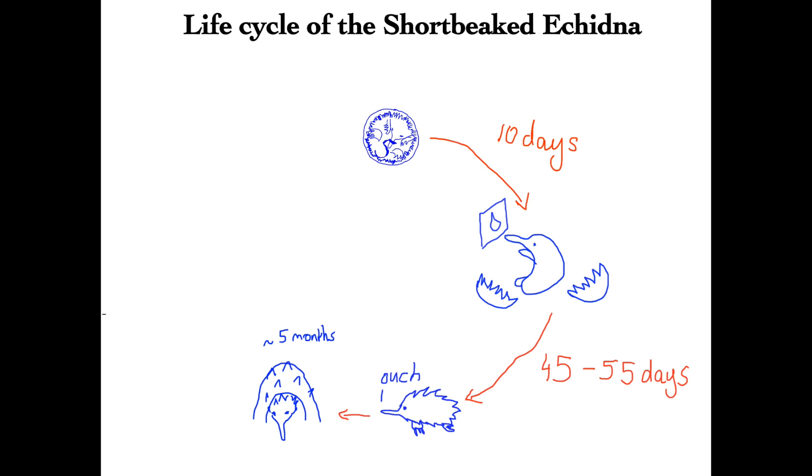When the female echidna reaches about five years of age, she becomes sexually active, and breeding season in July-August is when you actually see echidnas being semi-social, where up to 10 males will follow a female echidna around in what's called an echidna train. After a successful mating, a few weeks later, a single egg will be produced and the cycle continues.